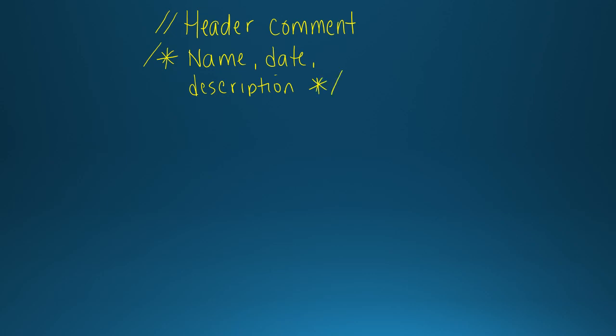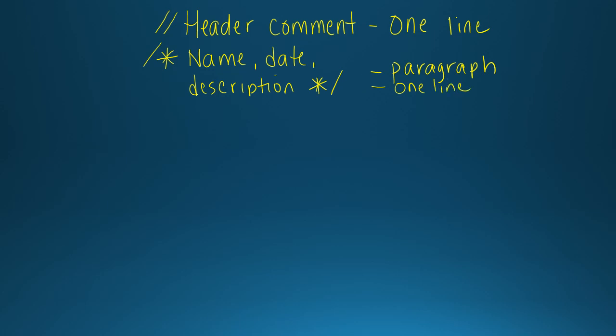The first way to comment is to put two forward slashes, and that's good for one line of code. The other way is to use a forward slash followed by an asterisk, and everything between the two asterisks is a comment — that works well for a paragraph or more than one line. You can also use that same style for one line. I don't care which way you comment, but every program in this class should have a header comment on the top.